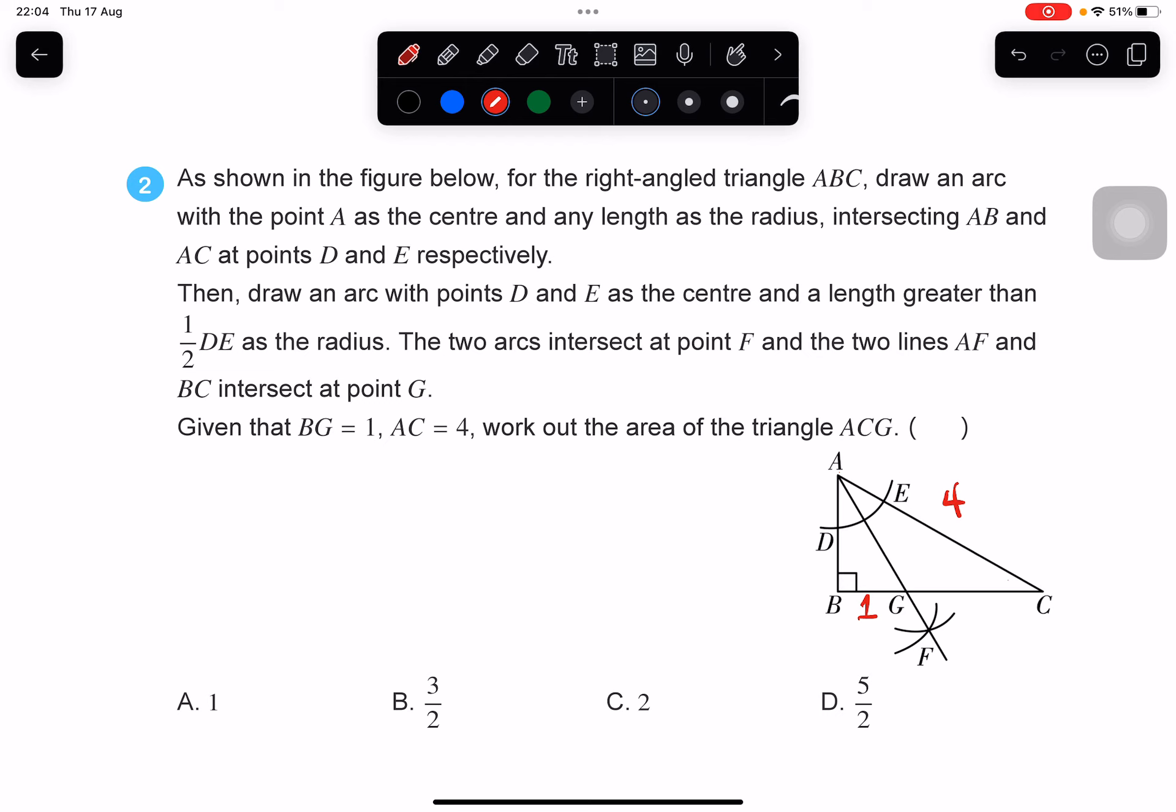For angle bisectors, we know that a very important property is that on any point of this angle bisector, it is the same distance to the two sides of the angle.